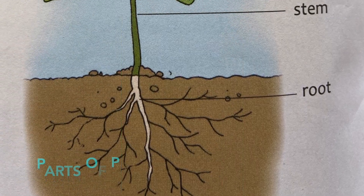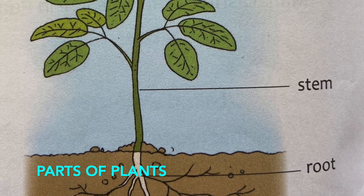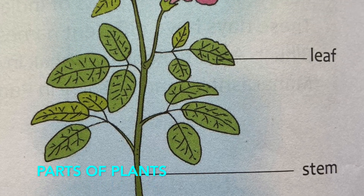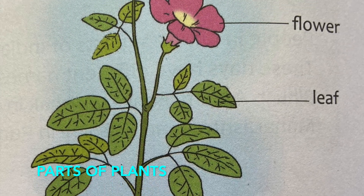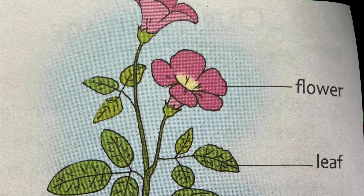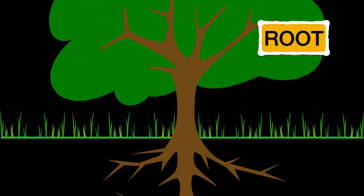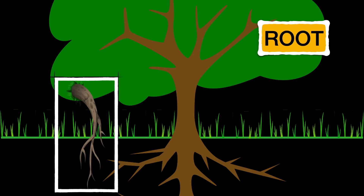A plant has many parts. Let us see what they are. First, root. The root fixes the plant to the ground. It also takes in water from the ground.